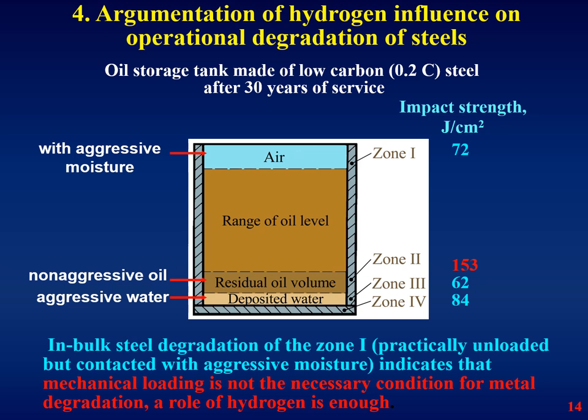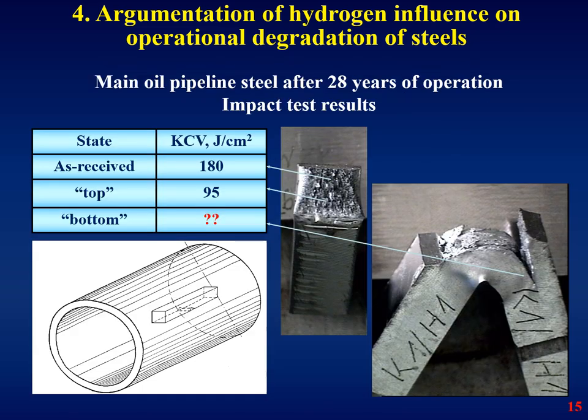Argumentation of hydrogen influence on operational degradation of steel: a clear evidence of the destructive role of hydrogen in degradation of long-term operated objects derives from a comparison of properties of different metal parts of the same installation that had different hydrogenation conditions during operation. As an example, consider an oil storage tank where some parts contacted with residual water and water vapor and another part with oil only. Parts which contacted with the aggressive, hydrogenation-promoting environment are characterized by a lower level of impact strength.